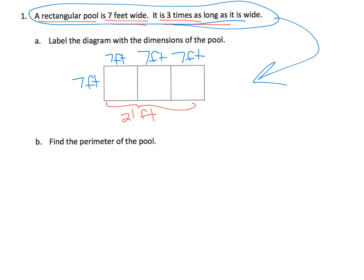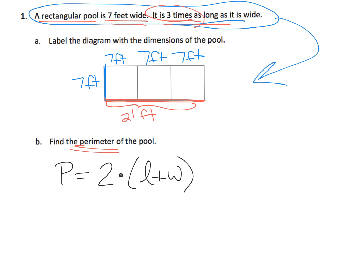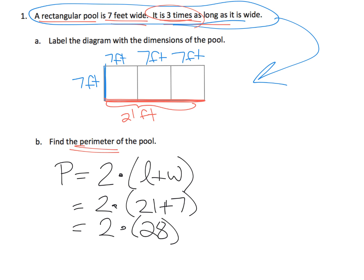So we know that the width is seven and we know the length is 21 feet, which is three times as long. The question is: what's the perimeter of the pool? The perimeter is two times the length plus the width. Length plus the width is these two sides right here, and we multiply by two because we have the other two sides. So it's going to be two times 21 plus seven. 21 plus seven is 28, and then we multiply that by two and we get 56, so the perimeter is 56 feet.